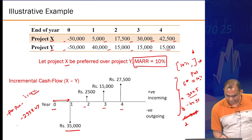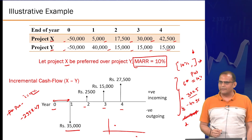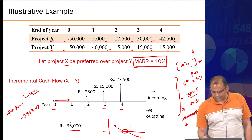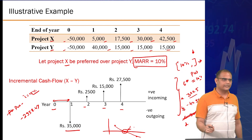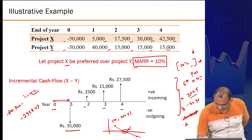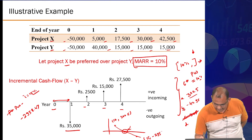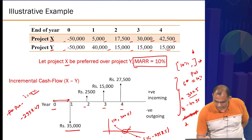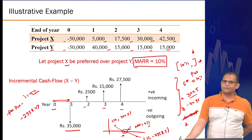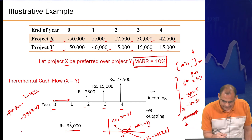Now you have one value where NPV is positive (at 10%) and one where NPV is negative (at 15%). So at least one solution lies somewhere between. Perform linear interpolation: you have the point (10, 300.5) and (15, −2958). The value of I at which NPV equals zero — the I* of this incremental cash flow series — comes out to approximately 10.46 percent.